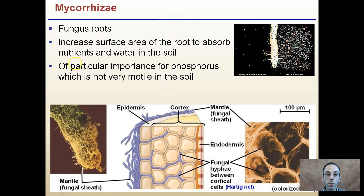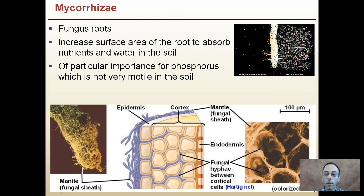Mycorrhizae, mentioned in a previous video, is a fungus-root association. You can see what it looks like when a root has a mycorrhizae association versus when it does not. This helps increase the surface area of roots to absorb nutrients and water. One notable nutrient is phosphorus, which doesn't move much in soil, so this beneficial fungus increases surface area to help the plant uptake phosphorus. In return, the plant gives the fungus sugars made in the leaves - a true symbiotic relationship.